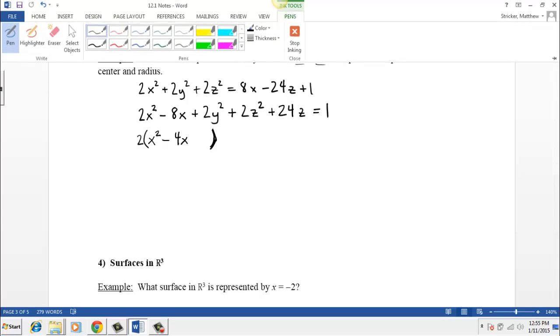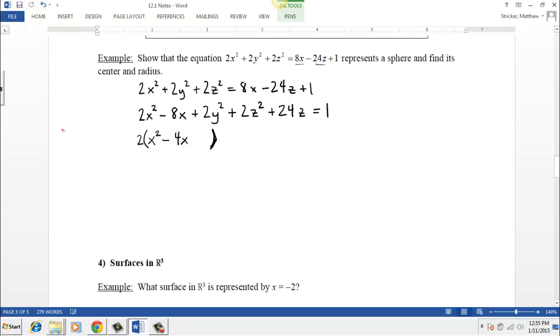Now to complete the square, let's go ahead and make a little note on the side here. We want to complete the square. So for this first one, the way you complete the square is you take negative 4 and you divide it by 2. And when you divide it by 2, it becomes negative 2.